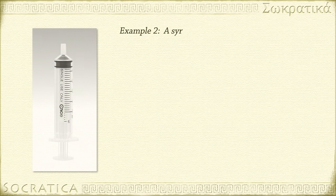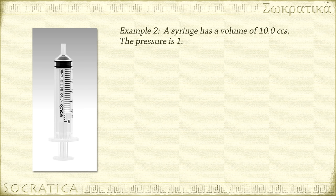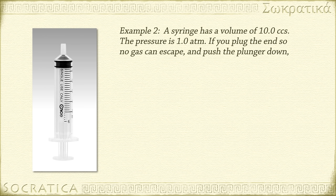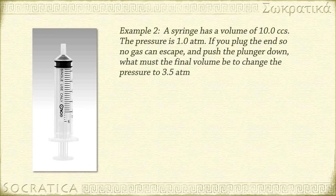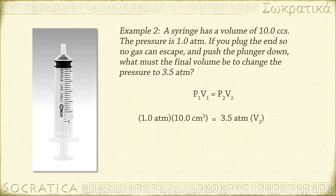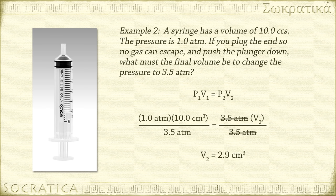A syringe has a volume of 10.0 cc's, or 10 cubic centimeters, and the pressure is 1.0 atm. If you plug the end so no gas can escape and push the plunger down, what must the final volume be to change the pressure to 3.5 atm? P1V1 equals P2V2: 1.0 atm times 10.0 cm³ equals 3.5 atm times V2. Divide both sides by 3.5 atm: V2 equals 2.9 cm³, or 2.9 cc's.